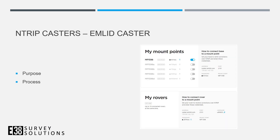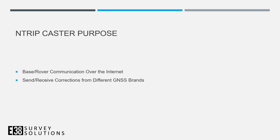Shifting gears, we'll briefly discuss the purpose and process of using NTRIP casters. NTRIP casters facilitate the communication of a base and rover using the internet. This may be especially useful if you're looking to connect the RS2 to other brands of receivers.